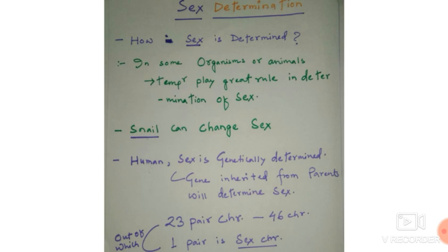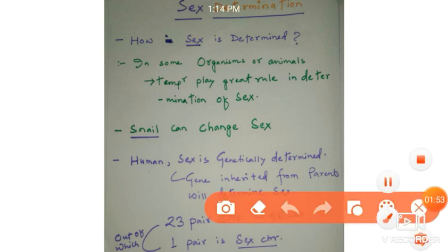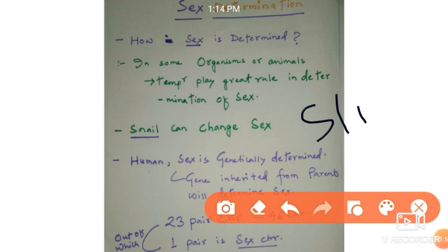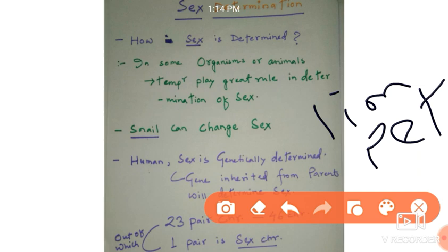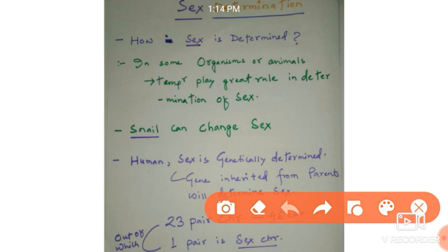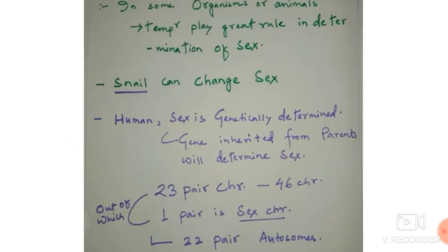The second approach is that snails can change sex. Snails are also called slipper limpets. When a snail is born, it is born as male, and it can change its gender during its life cycle into female. This means that snails can experience both sexes — male and female — during their life cycle.